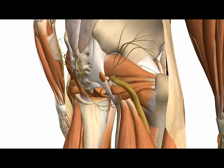You can see the sciatic nerve emerging below the piriformis in the greater sciatic foramen — it's above the sacrospinous ligament but below the piriformis — and you have the superior gluteal nerve coming above the piriformis.